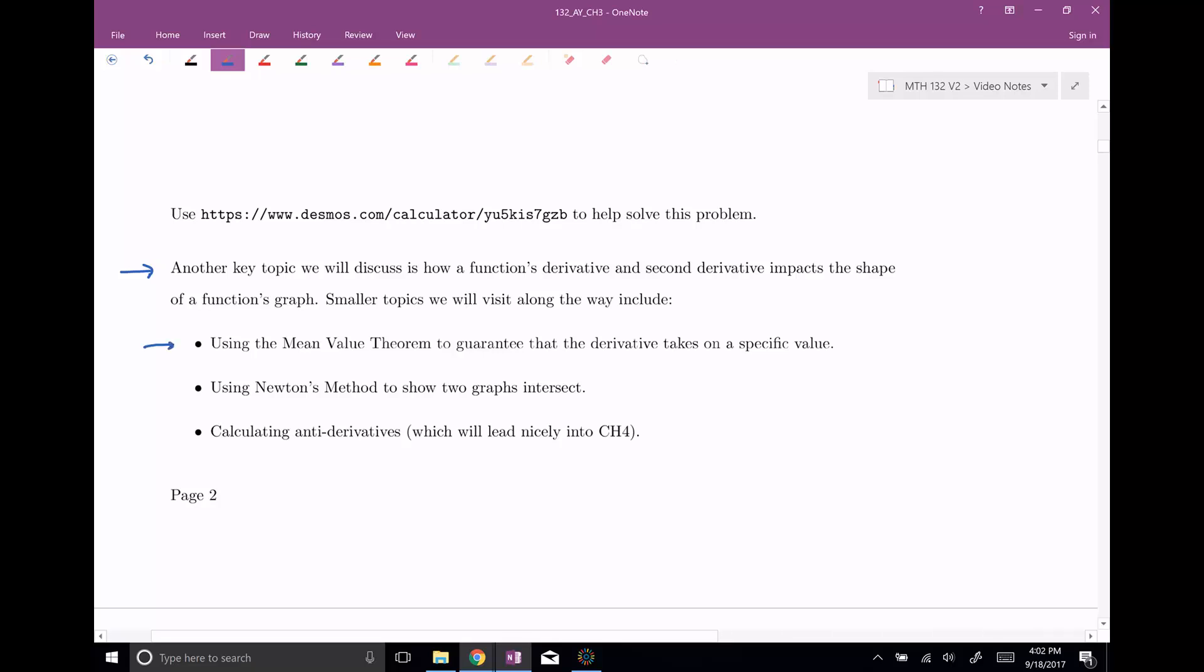The mean value theorem, which will guarantee that the derivative takes on a specific value. We'll talk a little bit about Newton's method. And then finally, how do you go backwards? We're pretty good at calculating derivatives. Can you take anti-derivatives? And this will transition nicely into chapter four. All right, so that's chapter three in a nutshell. Get to it.